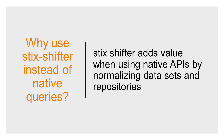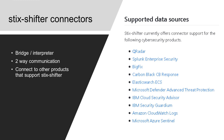Why use Stick Shifter instead of native queries or capabilities of each product? The benefit is to add value when using native APIs to normalize datasets and repositories. Stick Shifter can help organizations and analysts benefit from data and tools they already have by creating a common way to query the information available. A Stick Shifter connector is a bridge or interpreter to a new data source that allows a single STIX pattern to generate a native query for multiple data sources, providing two-way communication and producing unified results.